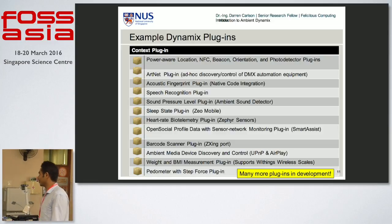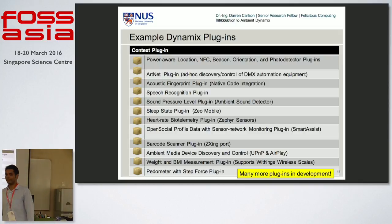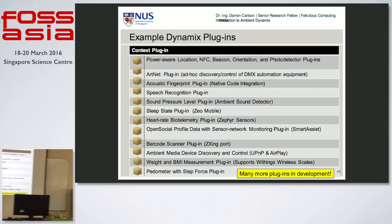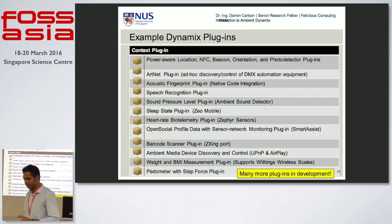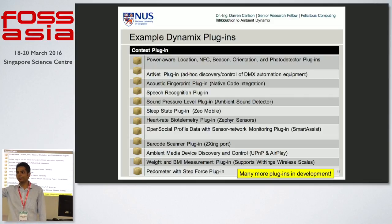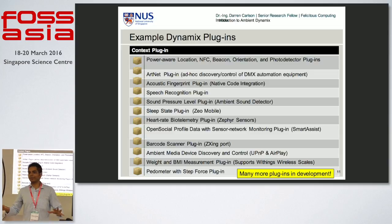Some of the plugins we have include: step detection, ambient media device discovery, barcode scanner, heart rate, sleeper state, speech recognition, activity recognition, and many more — we have hundreds of plugins right now. As new IoT devices come to market, like an armband that recognizes gestures, we write plugins for them. You can interconnect all these plugins to control mutually incompatible devices seamlessly.